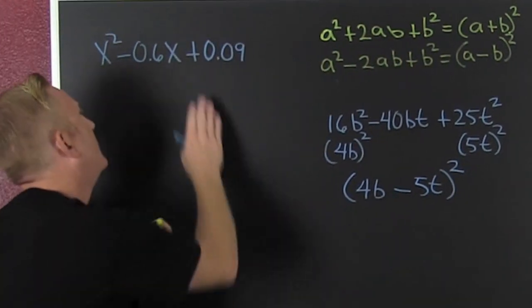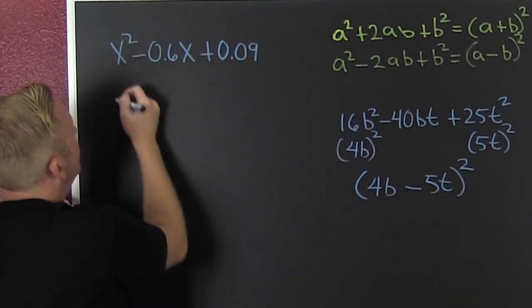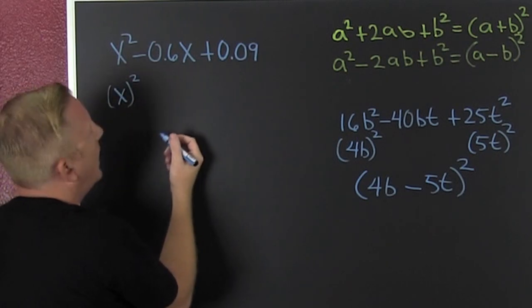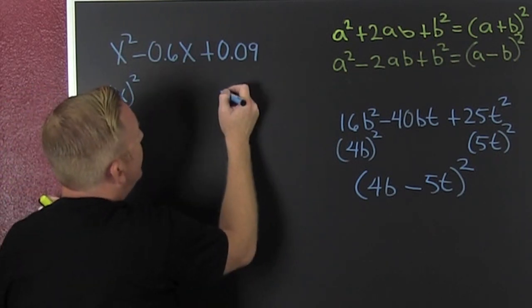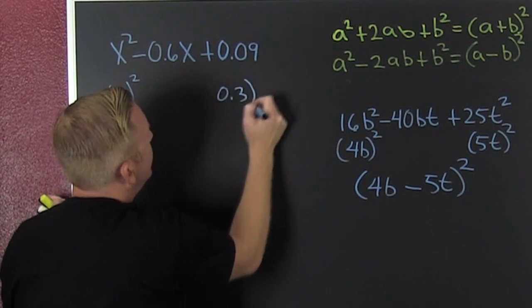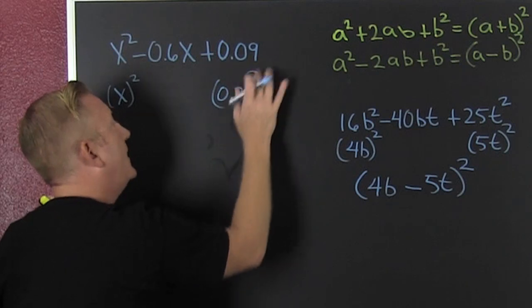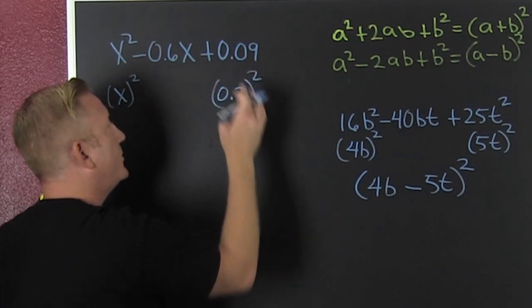And then I'm up here. Extravagant. Is this something squared? Yeah. That's x squared. And then this one over here is 0.3 squared. Let's see. 0.3 times 0.3. 3 times 3 is 9. Two decimal places. 1, 2.